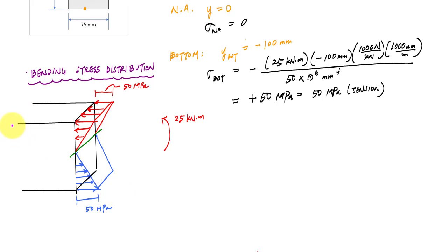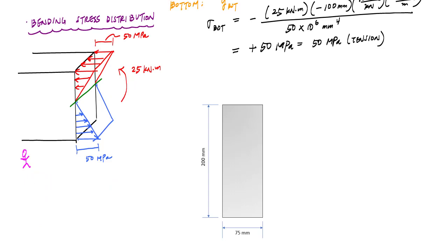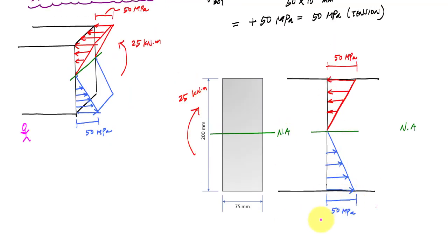It's difficult to draw a 3D representation every time, so we often draw a stress profile — essentially a side view of the stress distribution. Instead of a three-dimensional representation, we use a 2D side view, which we call a stress profile — a normal stress distribution due to the bending moment. I can use this stress profile to calculate the bending stress at any location on my cross section.